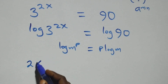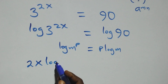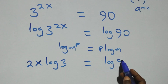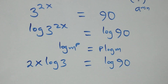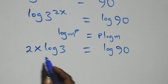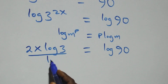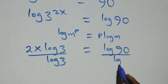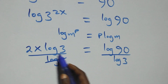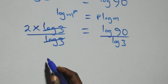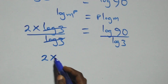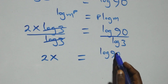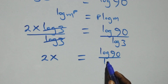This becomes 2x log 3 equals log 90 on this side. The next step: we divide both sides by log 3. The log 3 terms cancel each other, and we have 2x equals log 90 over log 3.